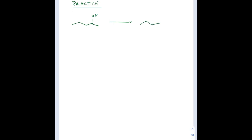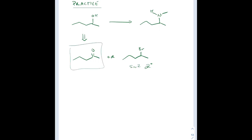Let's say we had this alcohol and wanted to form an amine with a methyl group on the nitrogen. We just learned a variety of ways to make amines. An SN2 reaction on a secondary alcohol-derived alkyl halide is not ideal, so the best option would be reductive amination. To get the ketone from the alcohol, we add PCC. That gives us the desired ketone, then we throw in methylamine to form the imine, and then reduce with lithium aluminum hydride or sodium cyanoborohydride to give our desired amine product.